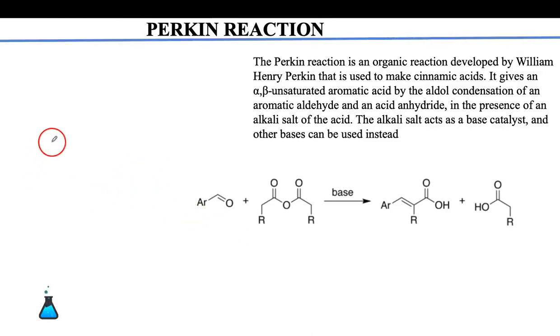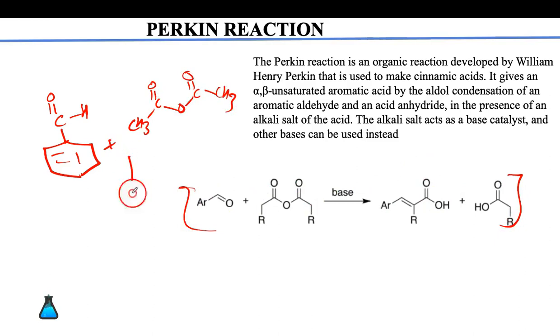Perkin reaction is specifically for benzaldehyde. When you take benzaldehyde—benzene having one CHO group—treated with acetic anhydride, I have given an example in this also. Benzaldehyde in presence of base, generally the base must be the same as the leaving group so that there is no substitution.